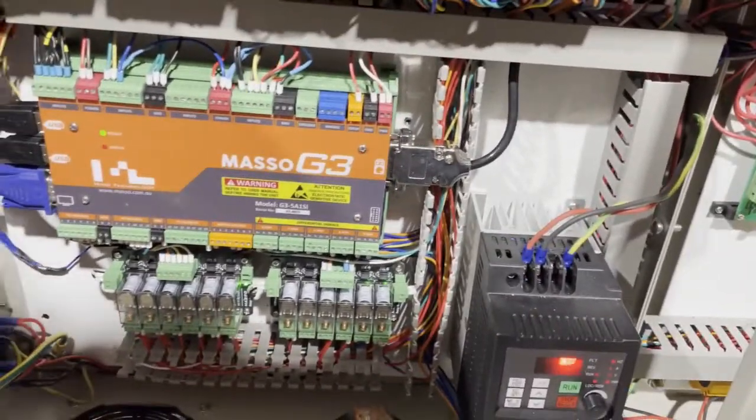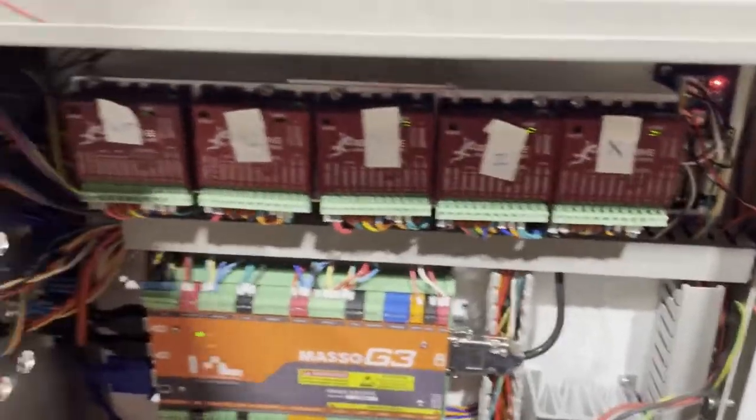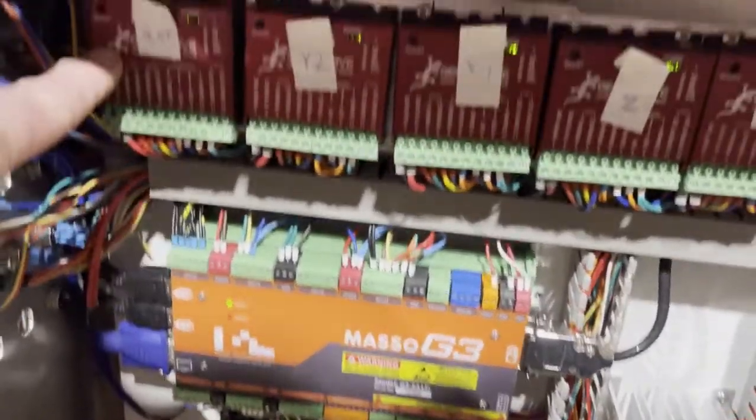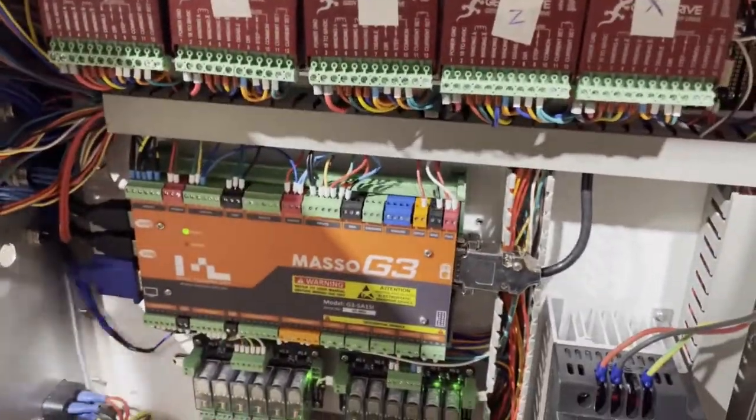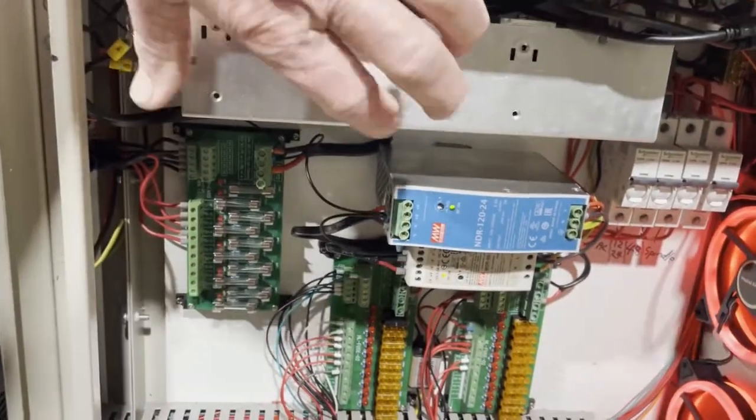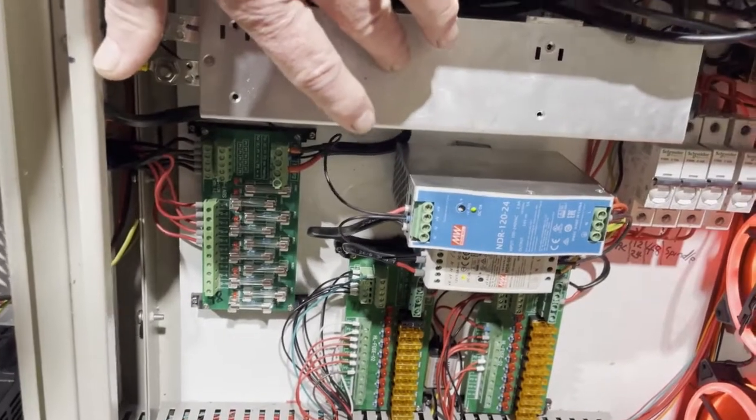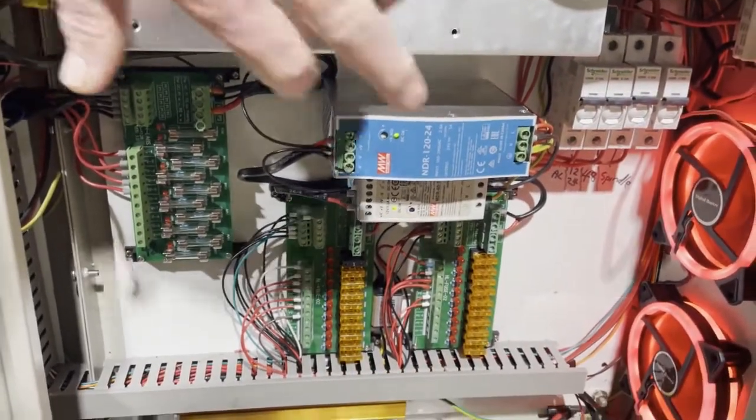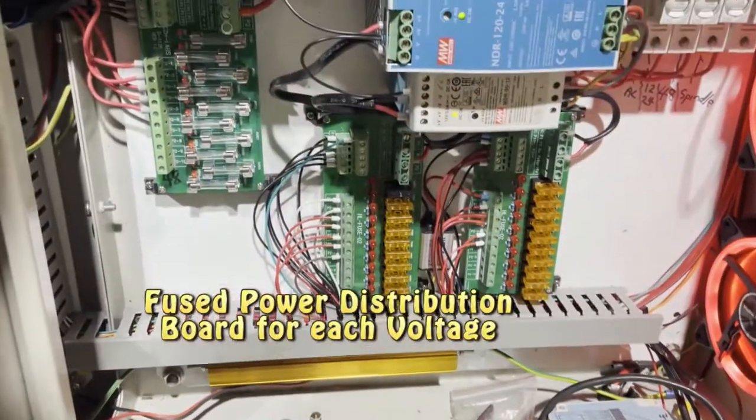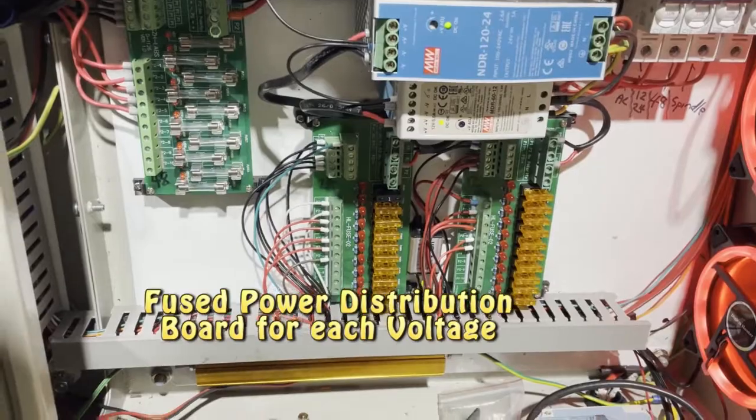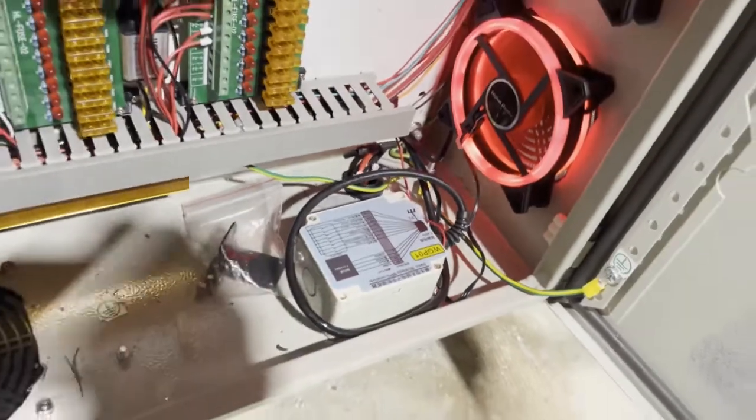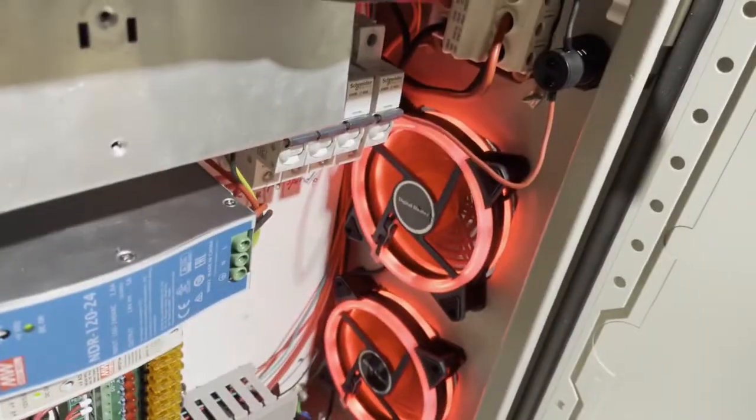So in the left hand cabinet I've got the Masso relay units and the stepper drivers. And over on the other cabinet I've got all the power supplies, so 48 volt supply for the steppers, 24 and 12, and I've got a little 5 volt converter down there for the old 5 volt circuit. And this little box is for a wireless pendant, that's the receiver for it. Plenty of air flowing through.